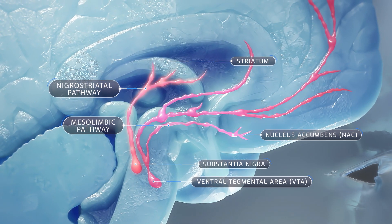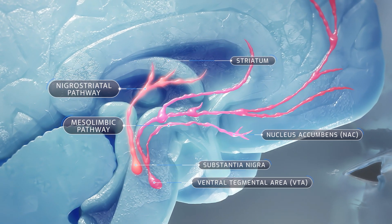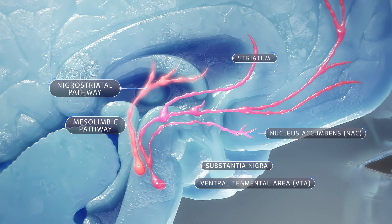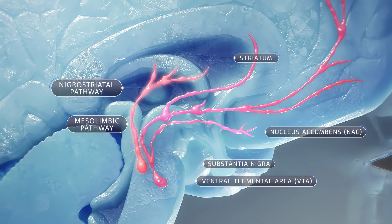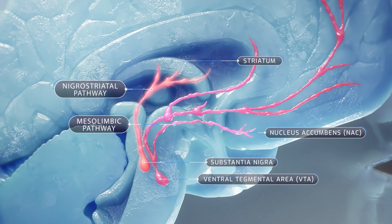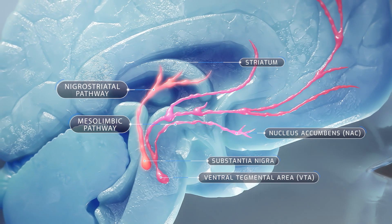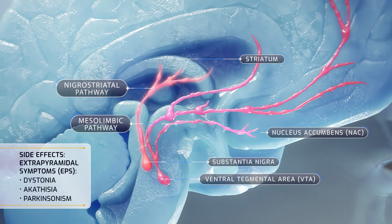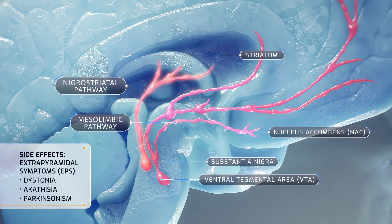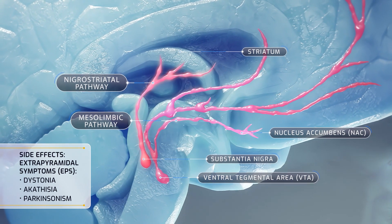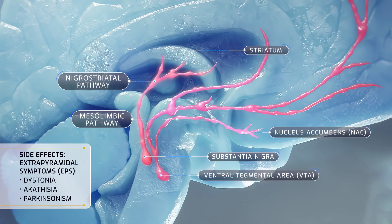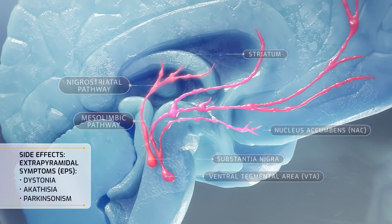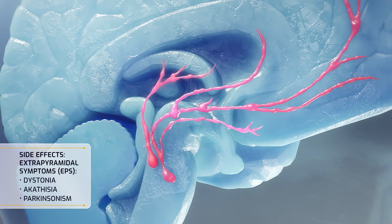However, blocking D2 receptors globally throughout the brain can lead to consequences related to other dopamine pathways, such as the nigrostriatal pathway, which can lead to adverse effects known as extrapyramidal symptoms, or EPS.